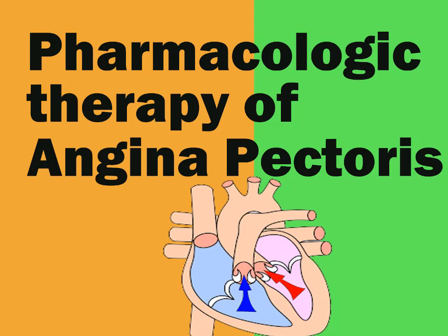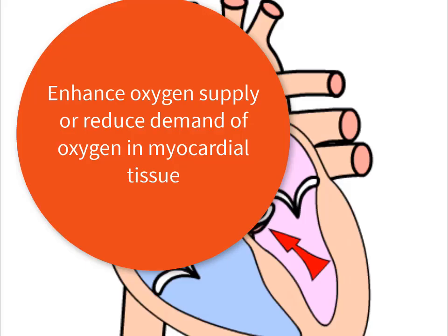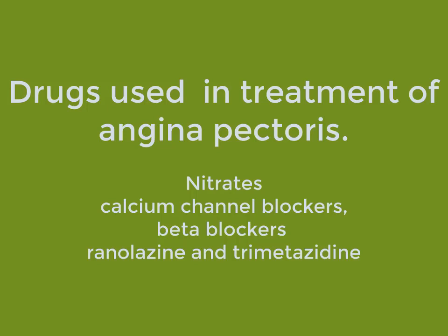The drugs used in angina pectoris either enhance myocardial oxygen supply or reduce myocardial oxygen demand. Nitrates, calcium channel blockers, beta-blockers, and newer drugs ranolazine and trimetazidine, which modify myocardial metabolism, are primarily used in the treatment of angina pectoris.